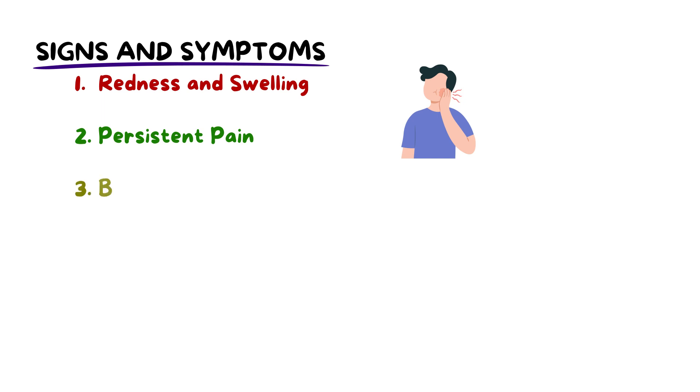Pericoronitis presents distinct signs such as redness, swelling, especially near the operculum, and persistent pain. If the infection worsens, symptoms develop into bad breath, difficulty opening the mouth, swollen lymph nodes, and occasionally a mild fever.